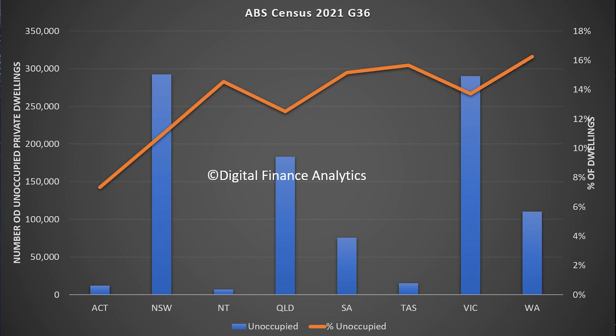In South Australia, about 75,000 unoccupied private dwellings, which is about 15%. In Tasmania, a pretty small number but 16%. In Victoria, close to 300,000, around 14% of dwellings. And in Western Australia, just over 100,000, around 16% of dwellings unoccupied. So it does vary considerably by state.